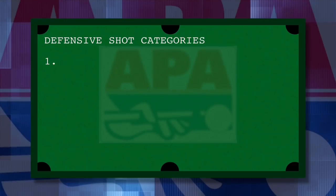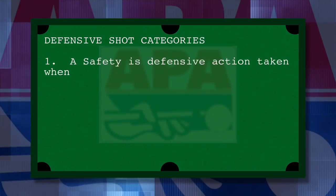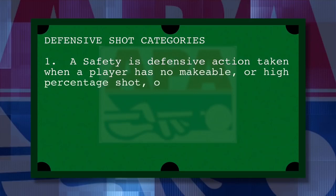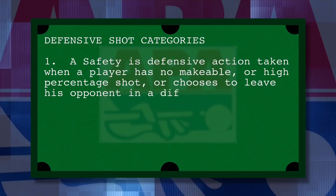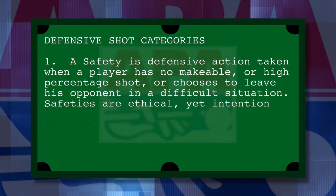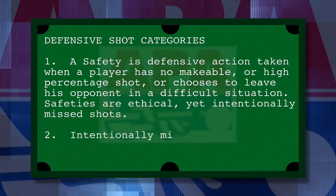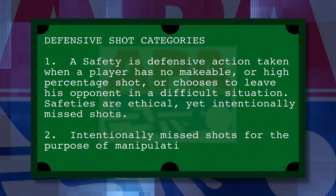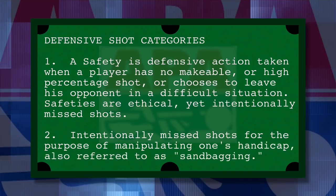Defensive shots fall into two basic categories. The first category is safeties. A safety is defensive action taken when a player has no makeable or high percentage shot, or chooses to leave his opponent in a difficult situation. Safeties are perfectly ethical but are intentional misses nevertheless. The second category is intentionally missed shots for the purpose of manipulating one's handicap, also referred to as sandbagging.